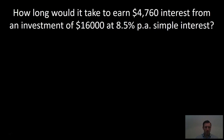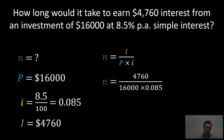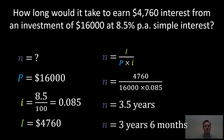Let's look at how long it would take to earn $4,760 interest from an investment of $16,000 at 8.5% per annum simple interest. We're trying to find time again. The principal is $16,000. The interest rate is 8.5%, which as a decimal is 0.085. The interest earned is $4,760. The formula is: time equals interest earned divided by principal times the interest rate as a decimal. Substituting the values, we calculate and get 3.5 years, which converts to three years and six months.